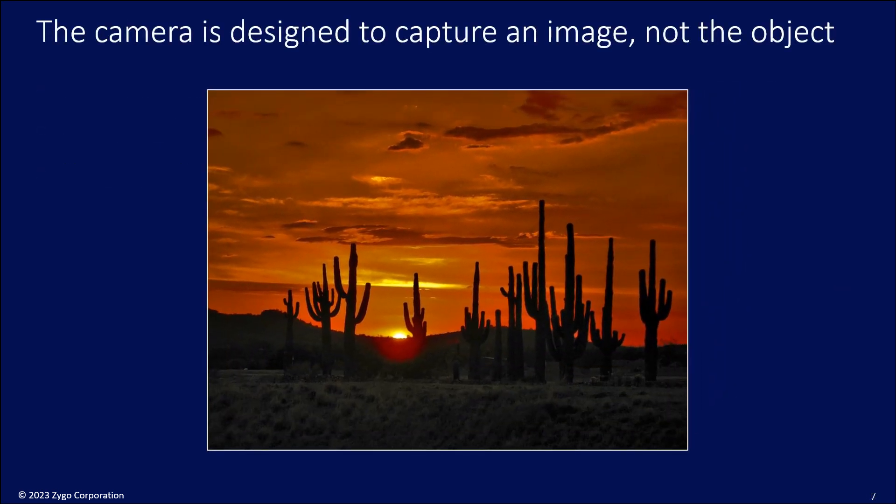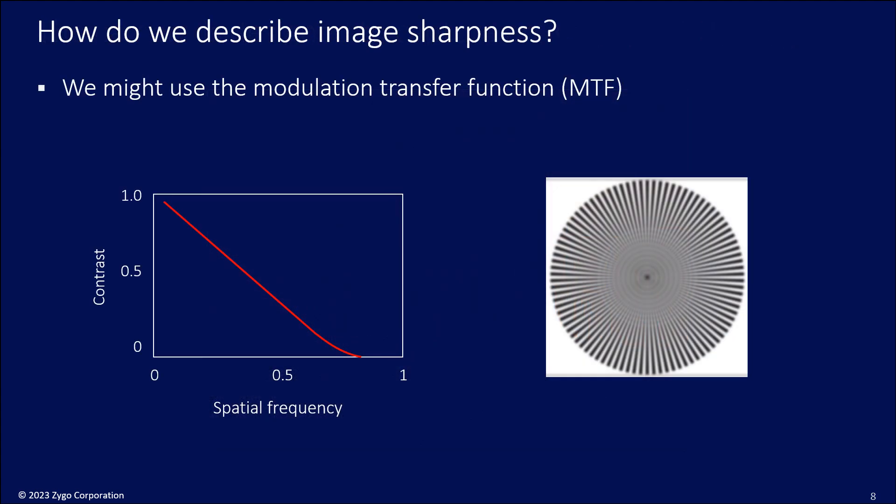What this means is our optical system, our camera, is designed to capture an image with well-defined, predefined scale limitations. It's not really designed to capture all of the information about an object. So how are we going to describe image sharpness in a way that will allow us to quantify some of these considerations?